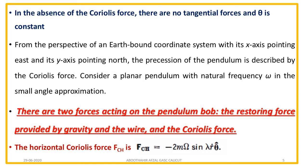There are two forces acting on the pendulum. One is the restoring force, similar to a simple pendulum — that is the horizontal component of the gravitational force, G sin(theta), acting all the time, which causes the oscillation. The second force is that since this is a very heavy, large pendulum over the rotating Earth, the Coriolis force effects come into play. The horizontal component of the Coriolis force is always perpendicular to the velocity of the moving body.